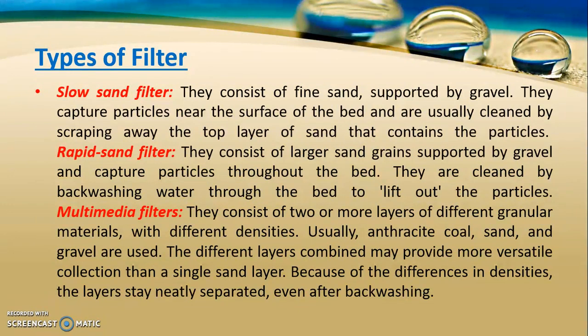There are different types of filters. The most common types are slow sand filter, rapid sand filter, and multimedia filter. Slow sand filters consist of fine sand supported by gravel and capture particles near the surface of the bed; they are cleaned by scrapping away the top sand layer. Rapid sand filters consist of larger sand grains supported by gravel and capture particles throughout the bed; they are cleaned by back washing. Multimedia filters consist of two or more layers of different granular materials with different densities — usually anthracite, coal, sand, and gravel — providing more versatile collection than a single sand layer, with layers staying separated even after back washing.